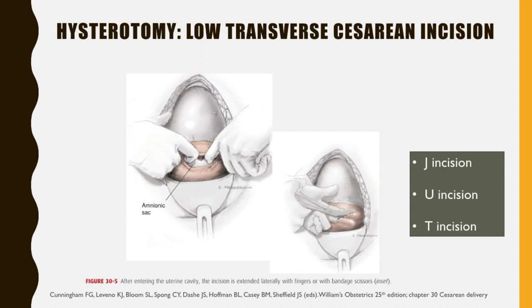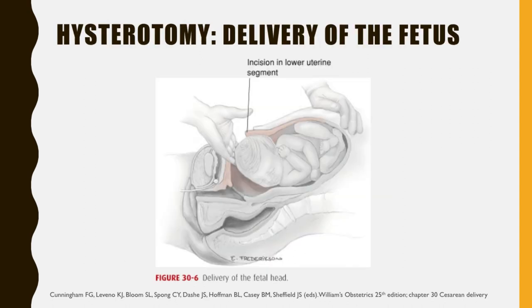At times, a low transverse hysterotomy provides inadequate room for delivery. In such instances, one corner of the hysterotomy incision is extended cephalad into the contractile portion of the myometrium — that is called the J incision. If completed bilaterally, you have the U incision. Some prefer to extend in the midline, which is the T incision. These have been linked with higher intraoperative blood loss, and as they extend into the contractile portion of the uterus, a trial of labor and vaginal delivery are more likely contraindicated in future pregnancies.